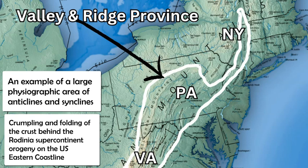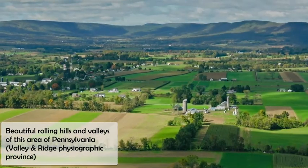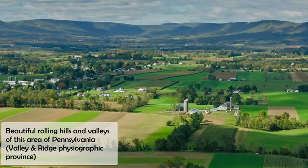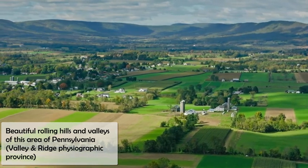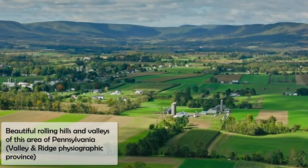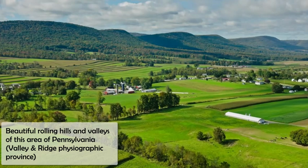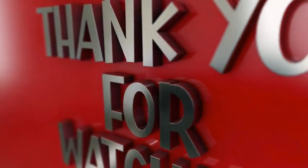In Pennsylvania, the orogeny of Rodinia — the supercontinent around 1.1 billion years ago — pushed Africa and Europe to collide with North America, forming the larger Appalachian Mountains. Behind it, compressional stress corrugated the crust, forming the valley-and-ridge anticline-syncline landscape we see today in central Pennsylvania: lovely ridges and high elevations, with deep wide valleys featuring farmland and rivers flowing through.